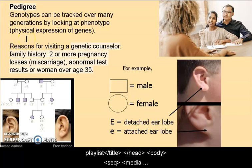Pedigree is not just for dogs and horses — we can look at genotypes over many generations. People visit genetic counselors when there's a family history of severe genetic disorder, two or more pregnancy losses or miscarriages, abnormal test results from fetal protein tests or other tests done during pregnancy, or if the mother is over 35. Insurance companies often use different age thresholds.